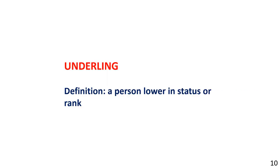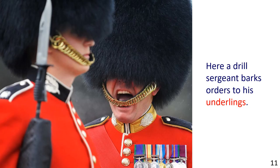Underling — definition: a person lower in status or rank. The picture shows a drill sergeant of the Scots Guards giving orders during an inspection of the guard. Sentence example: Here, a drill sergeant barks orders to his underlings.